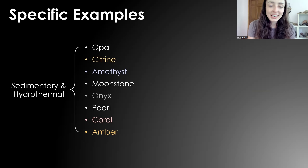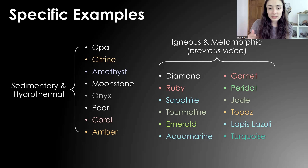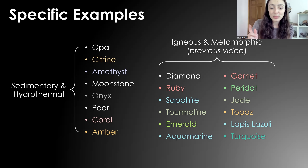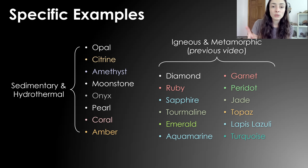The examples covered in this video include opal, citrine, amethyst, moonstone, onyx, pearl, coral, and amber. The ones from the previous video include diamond, ruby, sapphire, tourmaline, emerald, aquamarine, garnet, peridot, jade, topaz, lapis lazuli, and turquoise. If you want to see how any of those form, check out the previous video.